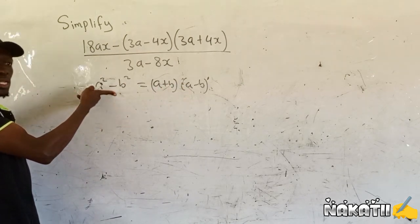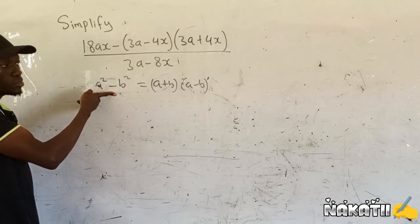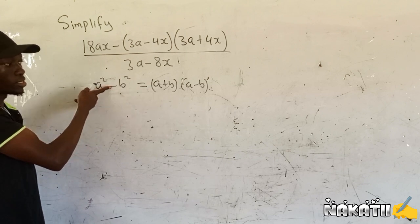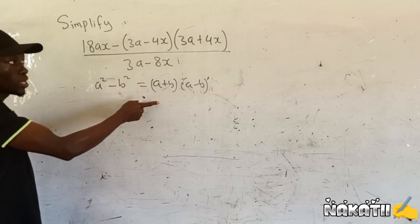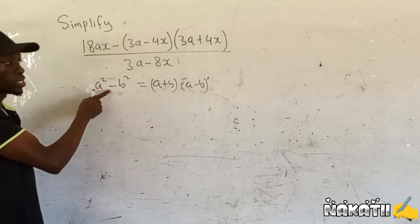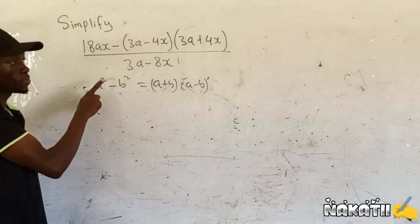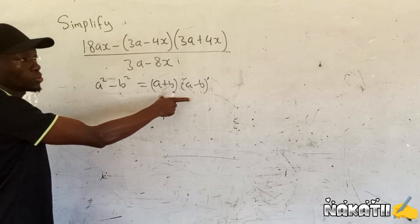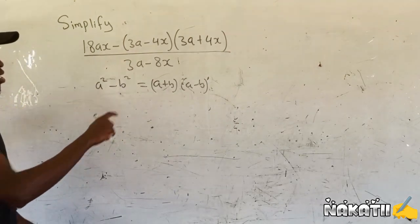You can now expand it and get this one here. If you expand this one, you get a minus a squared minus b squared. If you're told to factorize, this is how you factorize a difference of two squares.